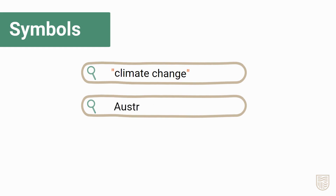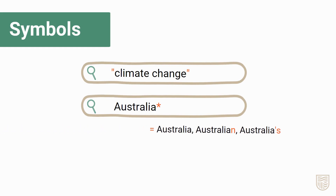Use an asterisk to search for all variations of a word at once. By entering Australia with an asterisk at the end, you'll get results that include Australia, Australian, and Australia's. This is referred to as truncation.